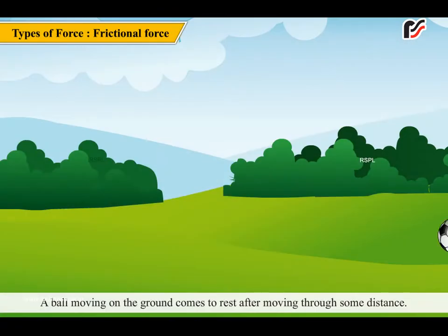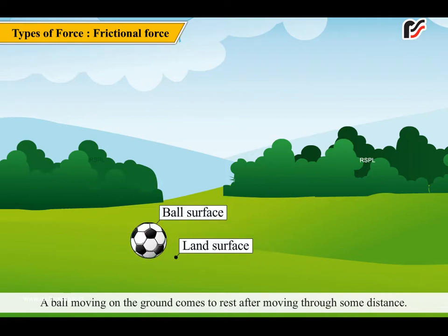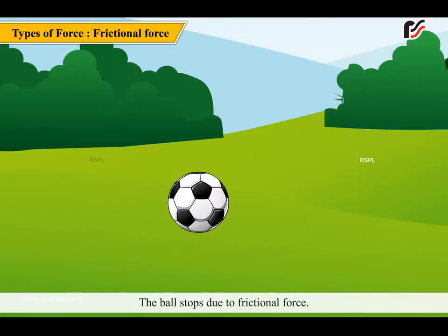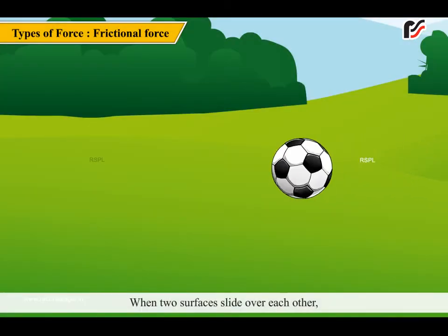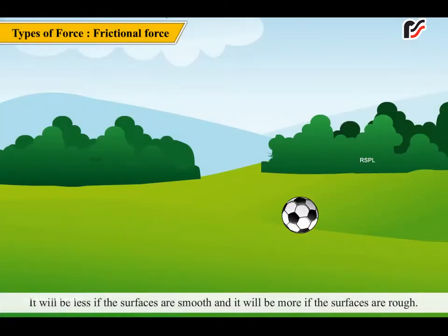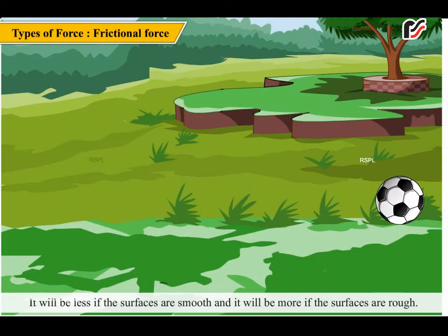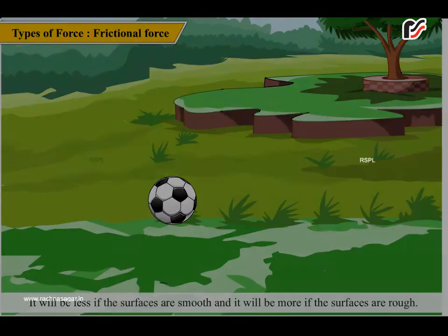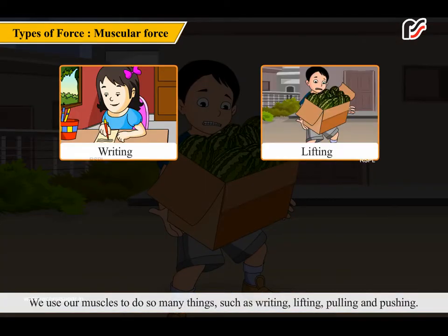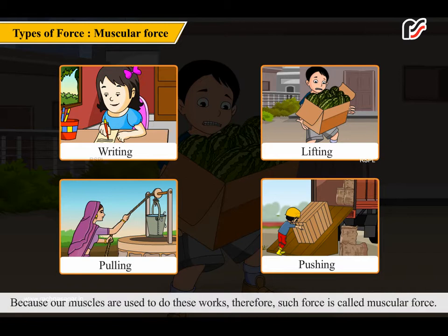A ball moving on the ground comes to rest after moving through some distance. Do you know what makes the ball stop? The ball stops due to frictional force. When two surfaces slide over each other, the force which opposes the motion is called the force of friction. It will be less if the surfaces are smooth and more if the surfaces are rough. We use our muscles to do so many things such as writing, lifting, pulling and pushing. Such force is called muscular force.